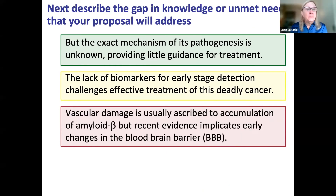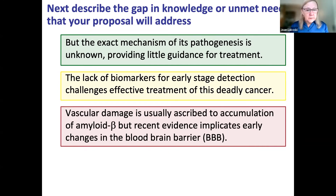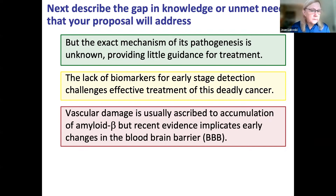After your topic sentence, the next strategic sentence describes the gap in knowledge or unmet need that your proposal will address. This sets your reader up — they understand your topic, and then once they hear 'but what we don't know is this,' you come along with a solution to fill that gap. You have to define it for your reviewer. For our three examples: the gap for the IRV virus is 'the exact mechanism of the pathogenesis of this virus is unknown, therefore providing little guidance for treatment' — notice it's a 'but' sentence. And for pancreatic cancer: 'the lack of biomarkers for early-stage detection challenges the effective treatment of this deadly cancer.'